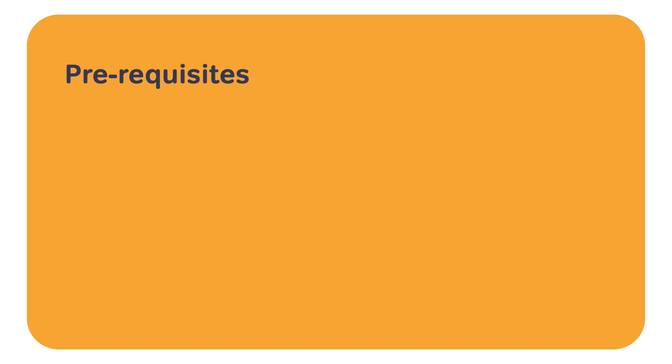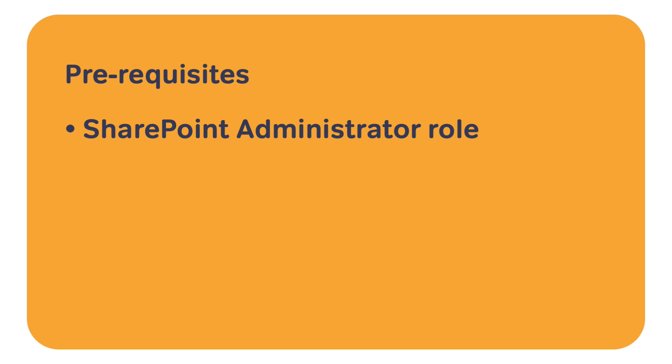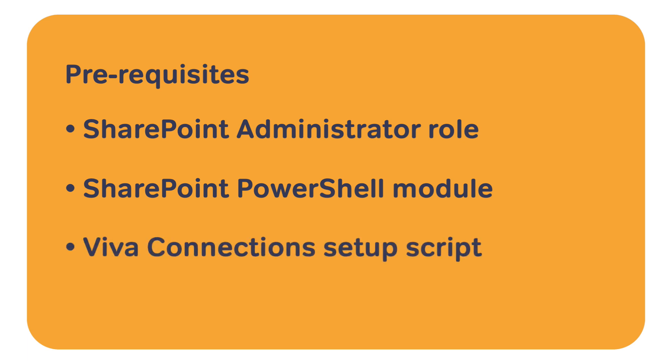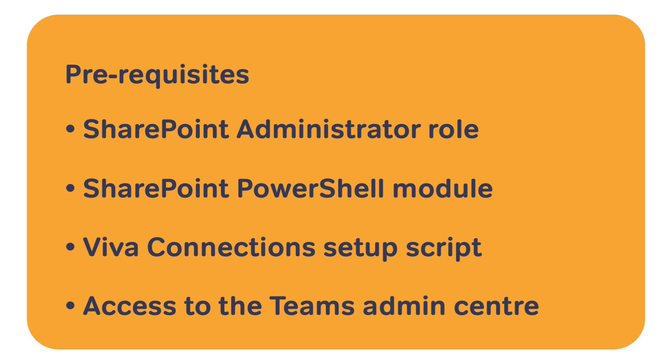There are some prerequisites you're going to need in order to do all of these things. First of all is to be at least a SharePoint administrator — you can do it if you're a global administrator as well. You're going to need to download and install the PowerShell module for SharePoint so you can run commandlets, and you need to download the Viva Connections setup script — I'll leave a link to that in the description below. Finally you'll need to be able to access the Teams administration centre and be able to upload apps into the catalogue and configure them.